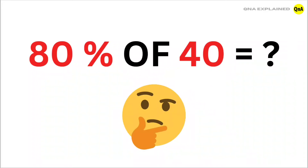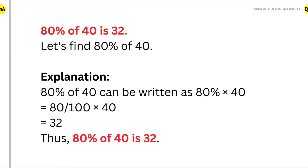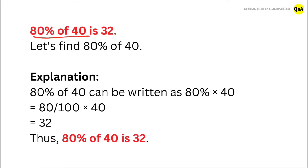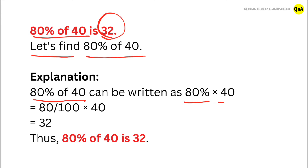80% of 40 is equal to 32. Let's find 80% of 40. 80% of 40 can be written as 80% multiplied by 40, and 80% can be written as 80 upon 100.